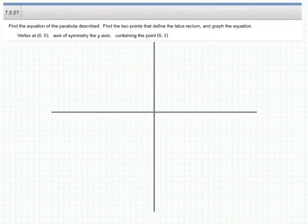Here we have to find the equation of the parabola, two points that define the latus rectum, and the graph for the parabola that has vertex at 0, 0.